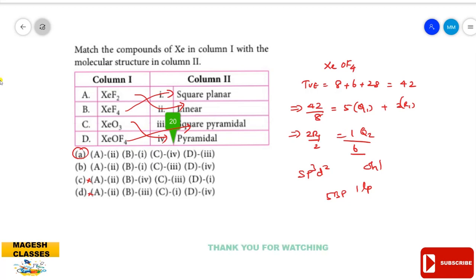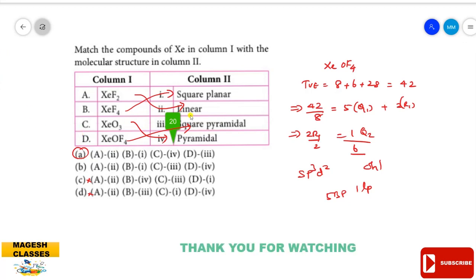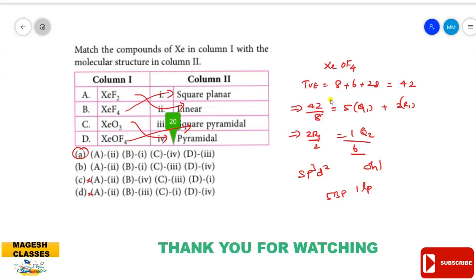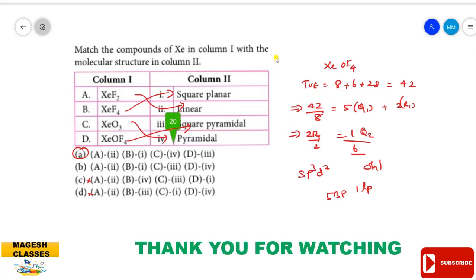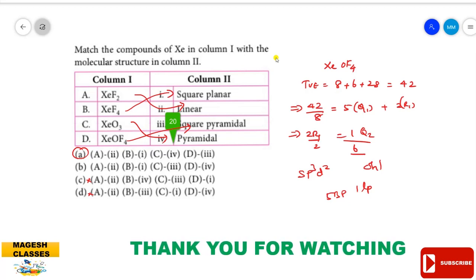In summary: XeF₂ is linear, XeF₄ is square planar, XeO₃ is pyramidal, and XeO₂F₂ is square pyramidal. In this way you can easily find out the geometry of simple molecules using this VSEPR technique. Up to this point we conclude this presentation; we will meet in the next video. I hope this is useful to you. Thank you for watching.